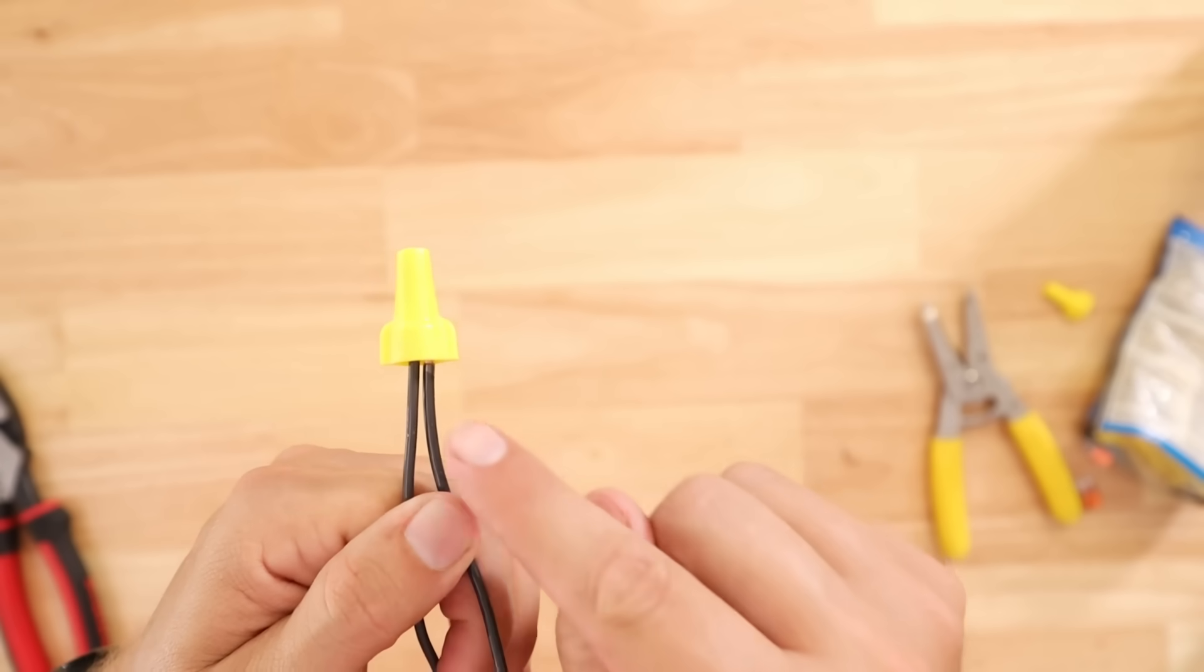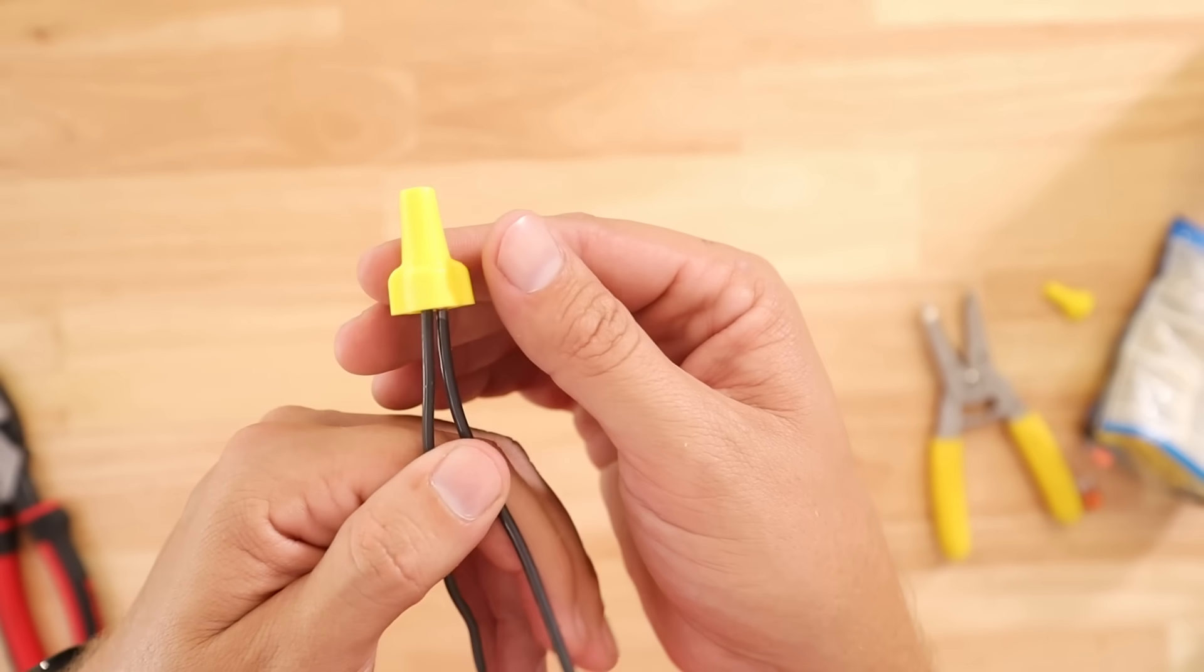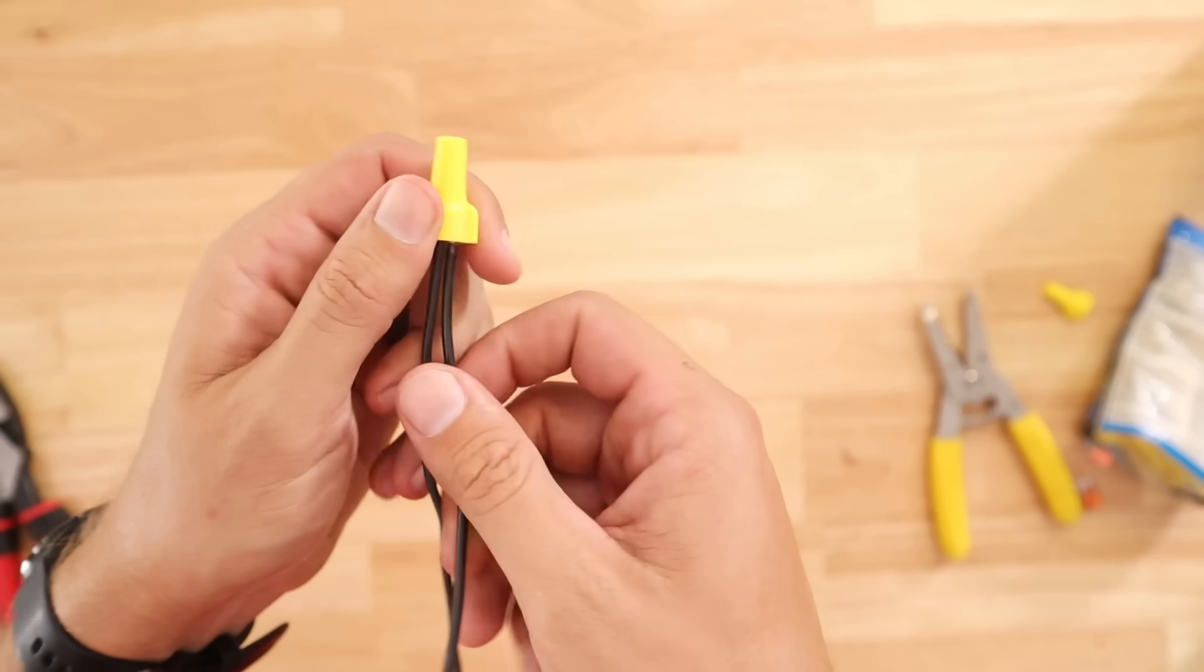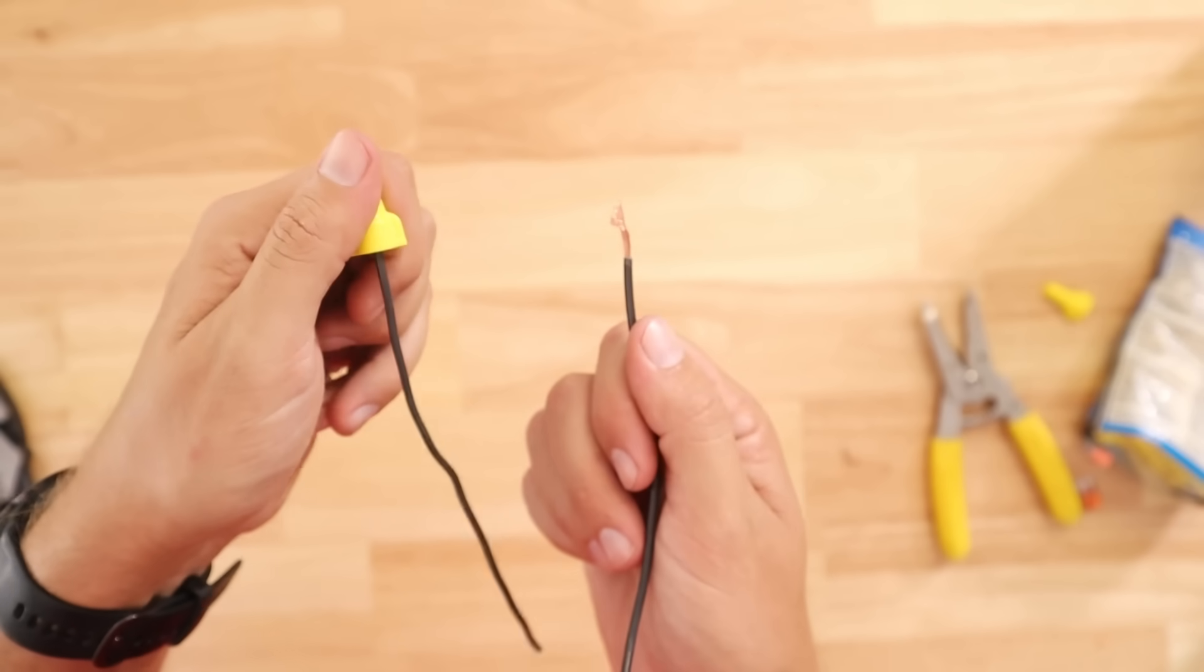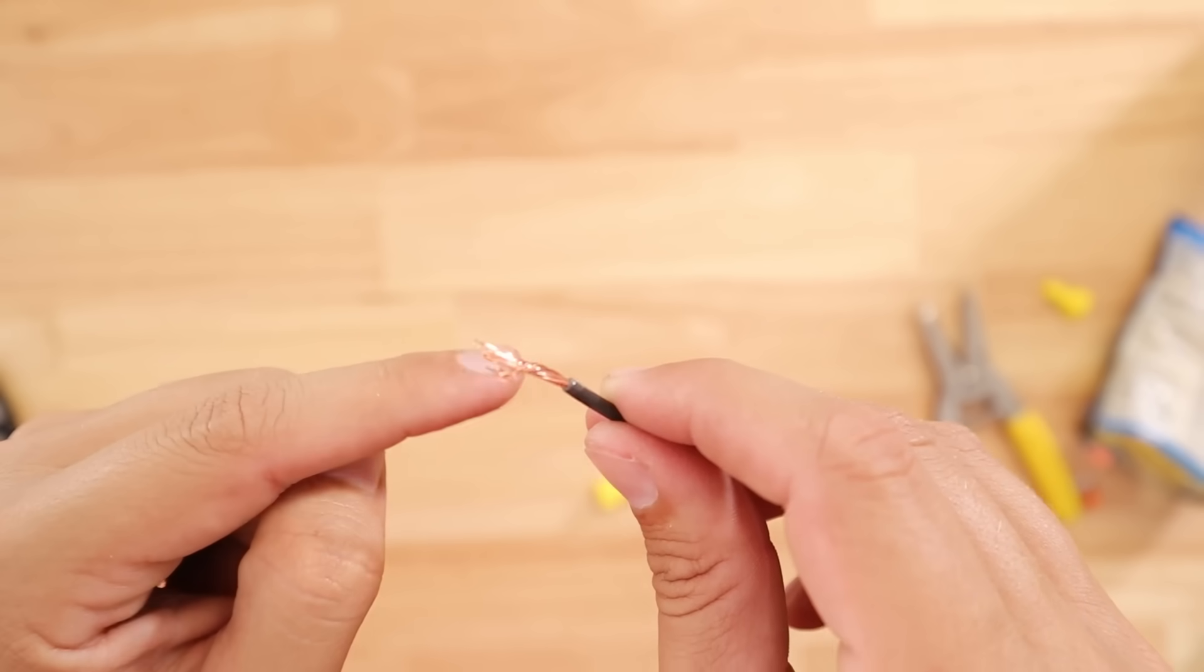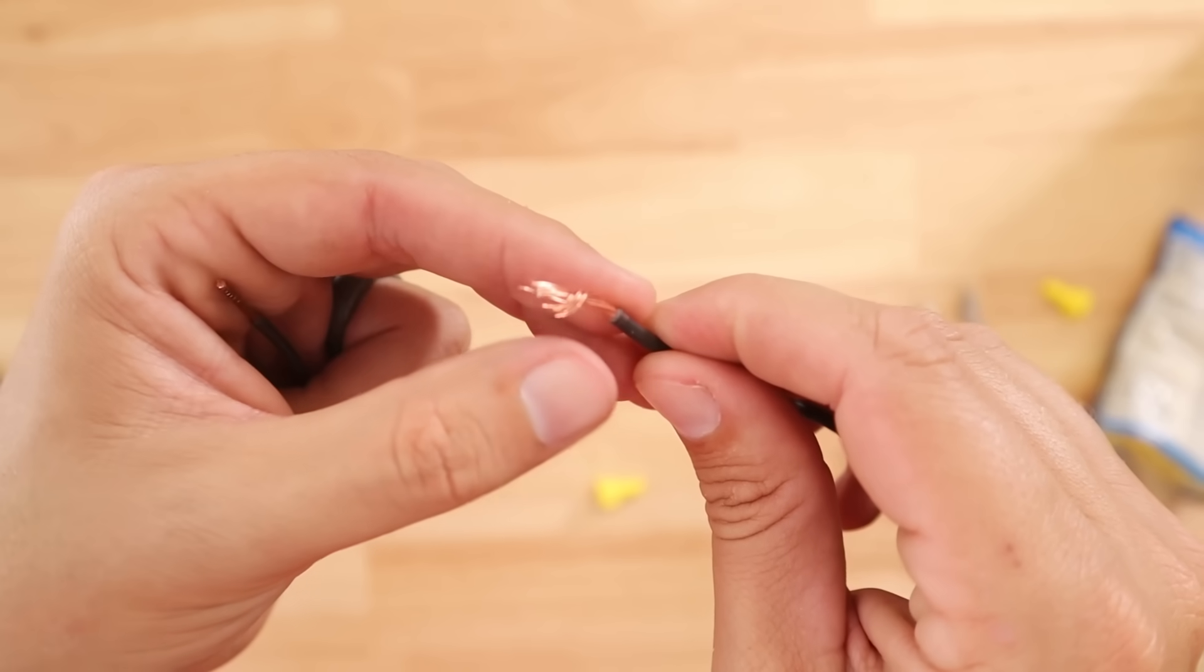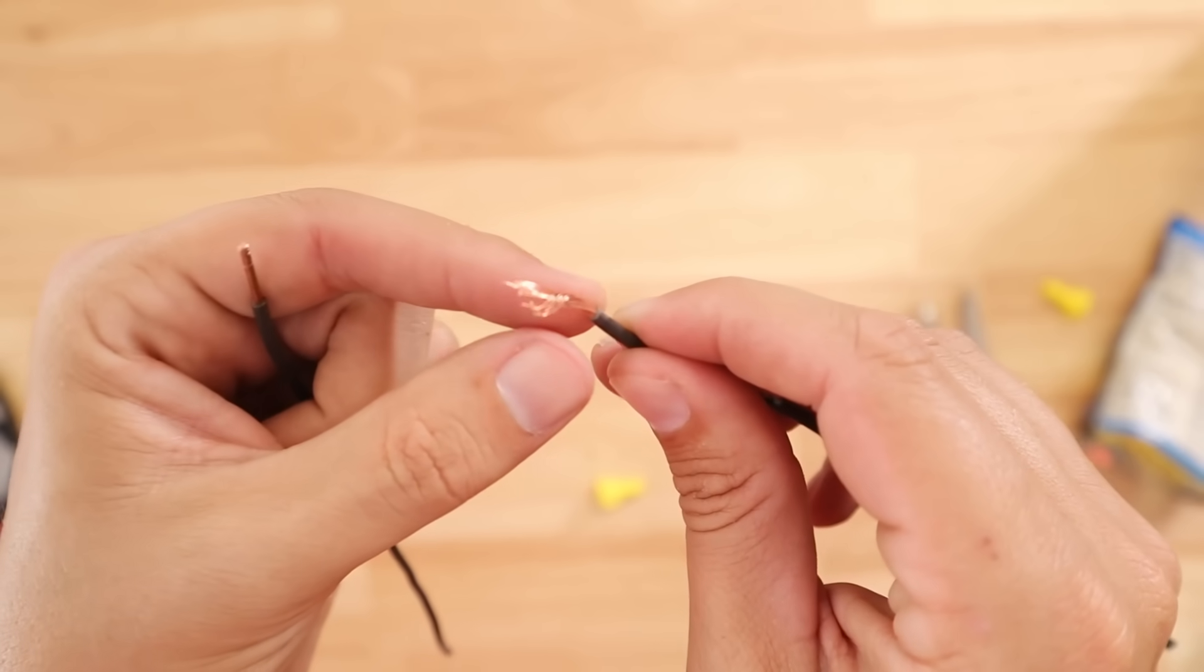And also what can tend to happen especially using stranded wire is it's not going to hold as well in a wire nut. It didn't take a whole lot of force to pull that out. And as you can see in this particular case just like with the solid core when you don't turn it enough we barely got that stranded wire to start wrapping around this solid core wire.